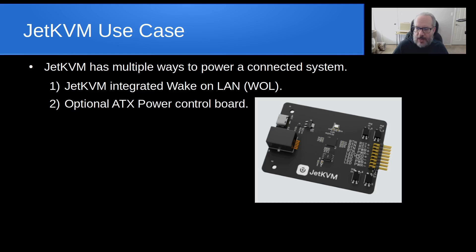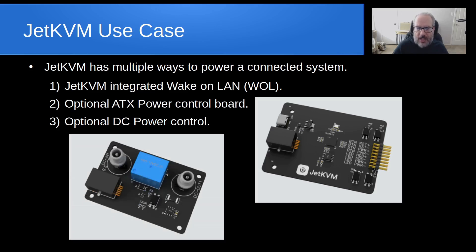It has a jumper over to the front pin headers for things like power and the reset button. There is also an optional DC power control, really meant for mini PCs, with a DC power in for a barrel connector from a typical mini PC power supply, and a DC power out. It has the same RJ-11 expansion connector that connects back to the Jet KVM.